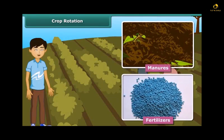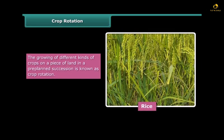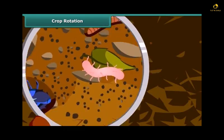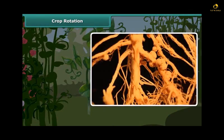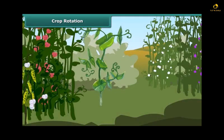Another method of replenishing the soil with nutrients is crop rotation. When a cereal crop like rice is grown, it uses up a lot of nitrogenous salts, so if another cereal crop is grown in the same soil, the soil becomes nitrogen-deficient. By rotation, a leguminous crop should be grown after the cereal crop. Some bacteria present in the root nodules of leguminous plants, known as rhizobium bacteria, fix atmospheric nitrogen to form nitrogen compounds. When these compounds enter the soil, it becomes more fertile, and when a cereal is grown next, food grain production increases.